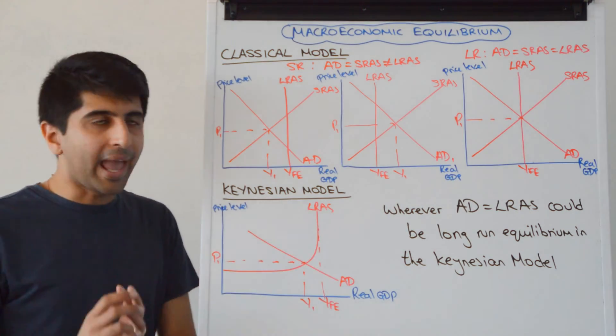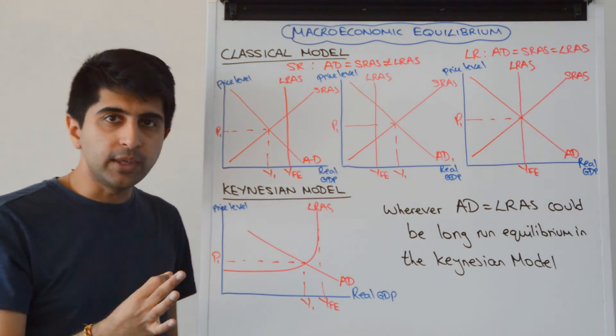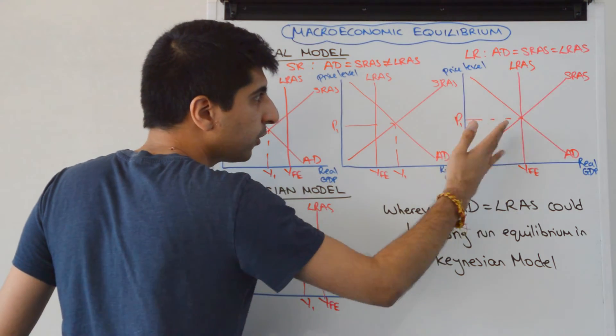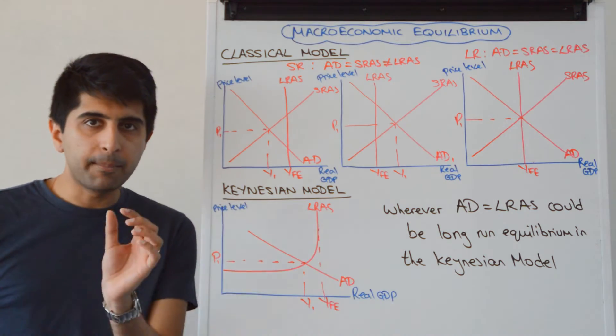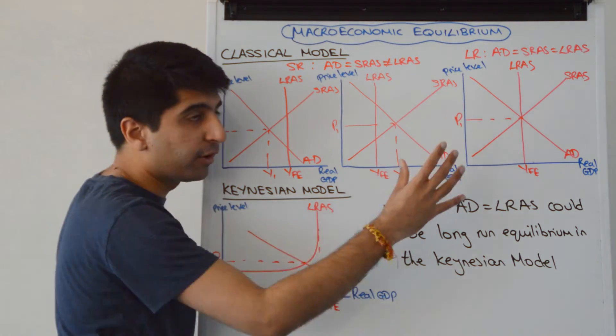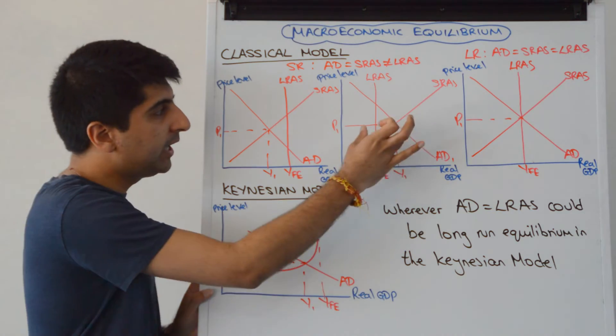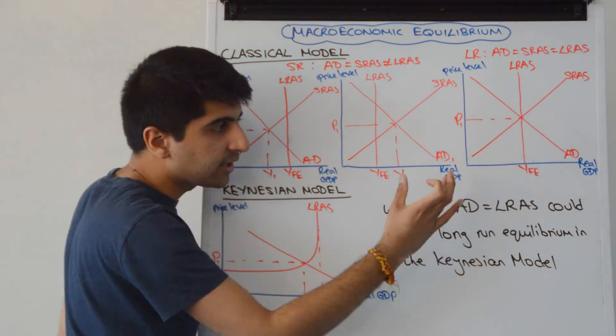Long-run equilibrium is when AD equals SRAS and crucially also equals LRAS. You can see what that looks like here, where AD equals SRAS equals LRAS - i.e., the economy is at the full employment level of output. There are no gaps. Here we had a deflationary gap or recessionary gap, a negative output gap. Here an inflationary gap or positive output gap. No gaps here - we are at YFE.